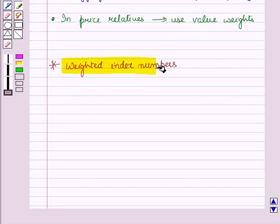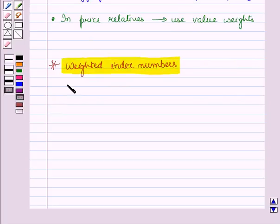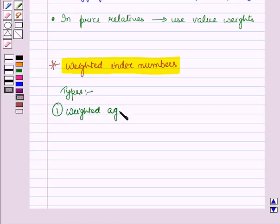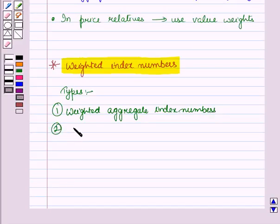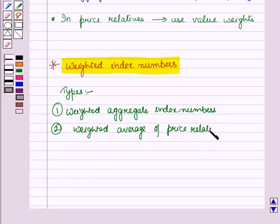Now let us discuss the types of weighted index numbers. The weighted index numbers are of two types: first is the weighted aggregate index numbers, and the second is the weighted average of price relatives.